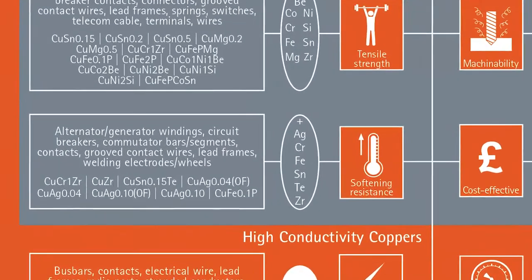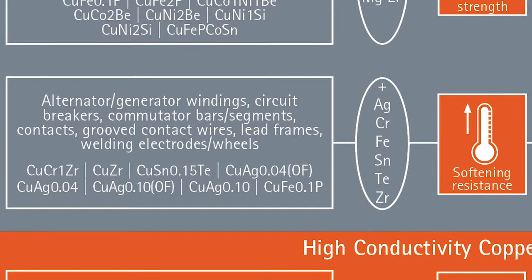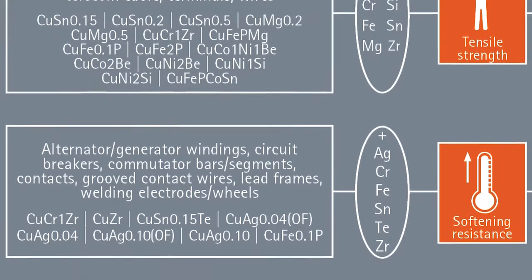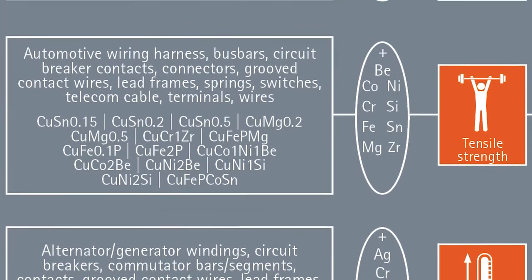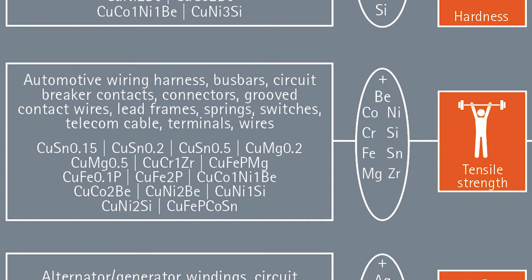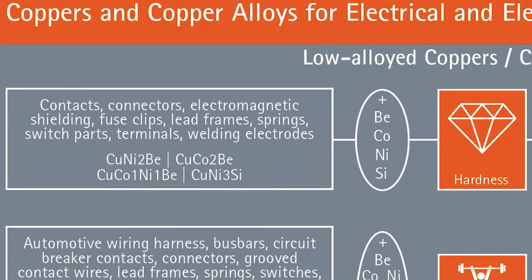For commutators in electrical machinery operating at high temperature, elevated resistance to softening is required. For overhead railway contact wires operating under tension, increased tensile strength is needed to permit the passage of high speed trains. Stressed components, like contact springs, require enhanced hardness.